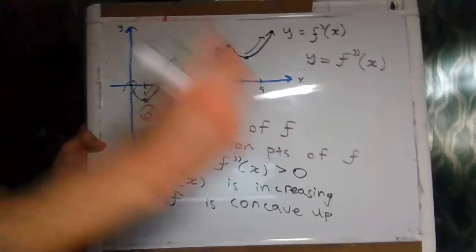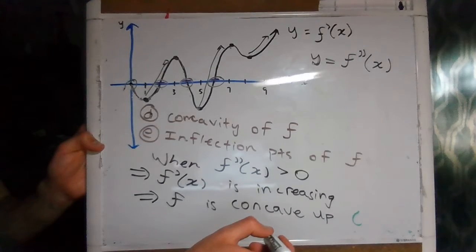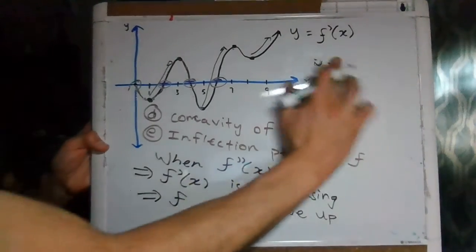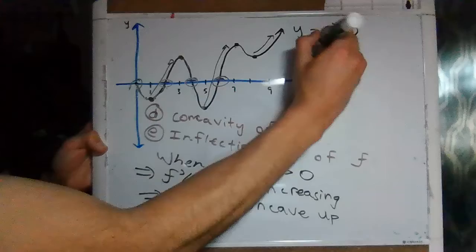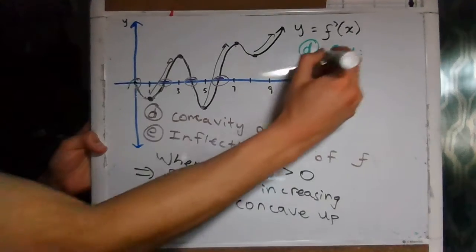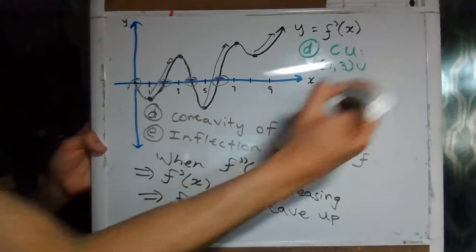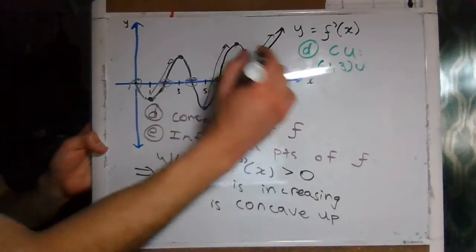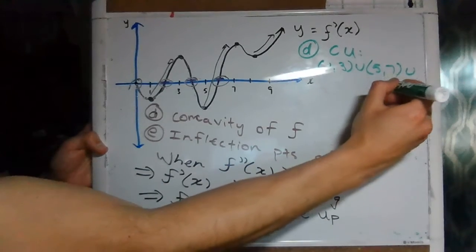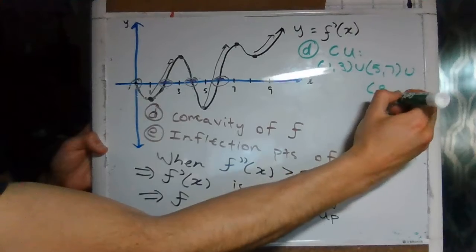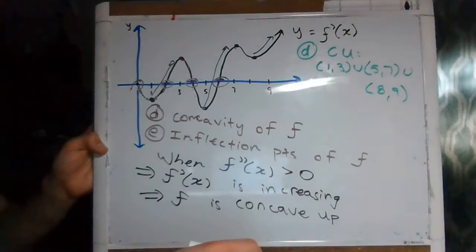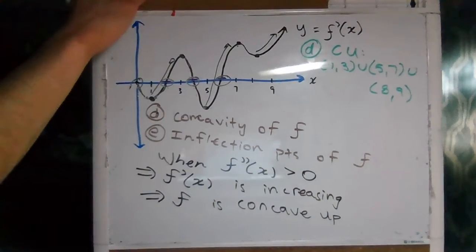That's where f is going to be concave up. So for part d, f is concave up over the following intervals: 1 to 3, union 5 to 7, union 8 to 9.